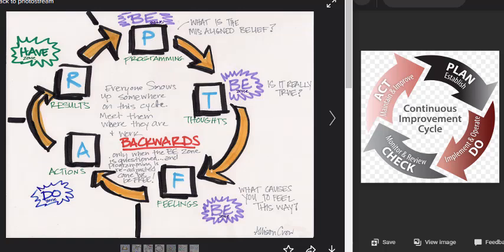It's actually a constant circle. You have your programming, thoughts, feelings, you take action, and if you don't get the results you're looking for, you analyze those, make changes, and go back in and change your programming. Think of a new way, a better way to do it, and put it back into action and get the results.